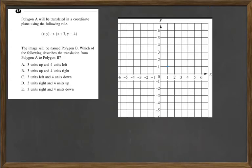Question 13. Polygon A will be translated in a coordinate plane using the following rule. The x and y coordinates will add 3 to the x and subtract 4 from the y.